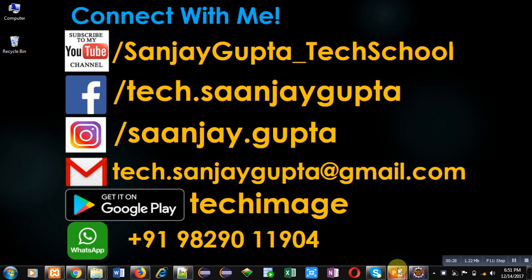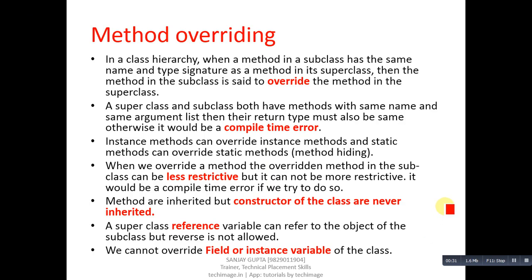Now coming to the topic, first I am going to explain the concept of method overriding and then I will demonstrate an example. The first point says: in a class hierarchy, when a method in a subclass has the same name and type signature as a method in its superclass, then the method in the subclass is said to override the method in the superclass.